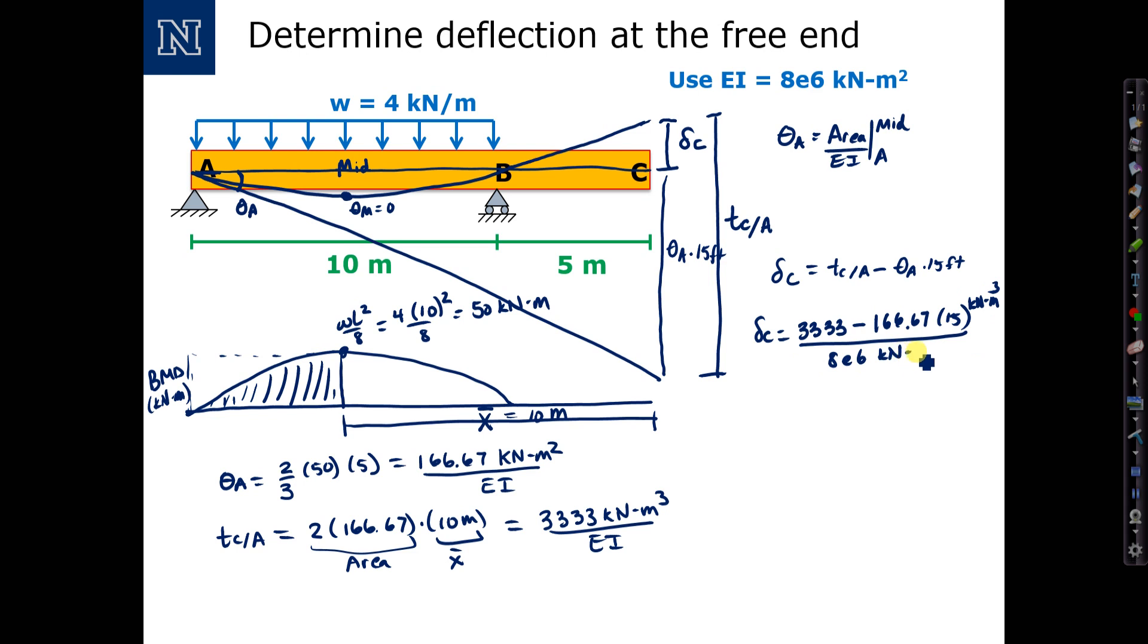Divide by EI, which is given as 8 times 10 to the 6th kilonewton meters squared.